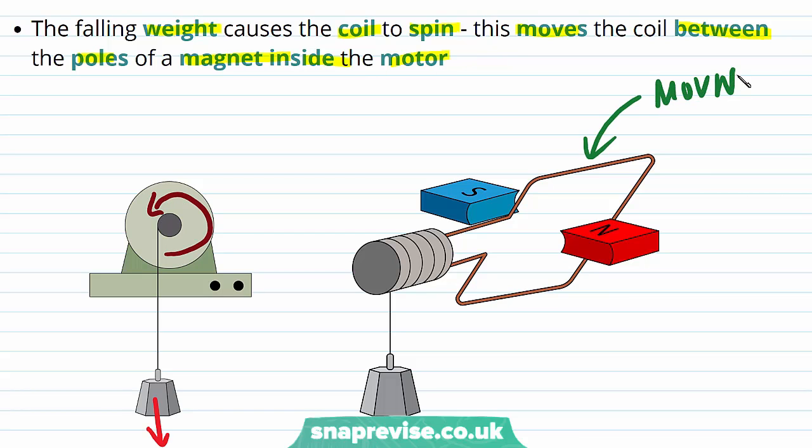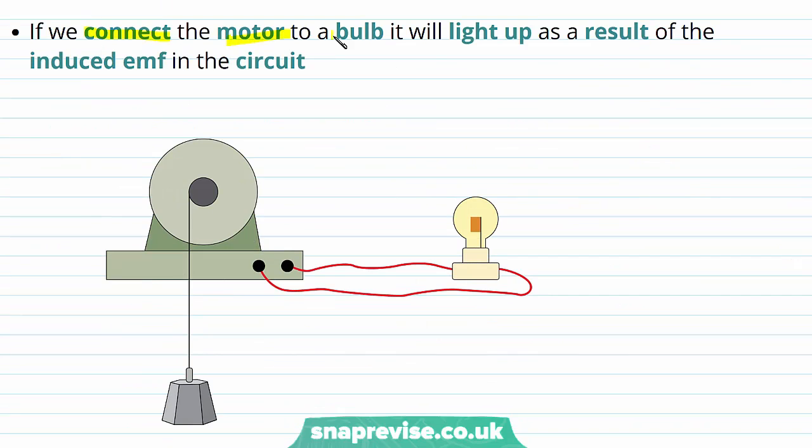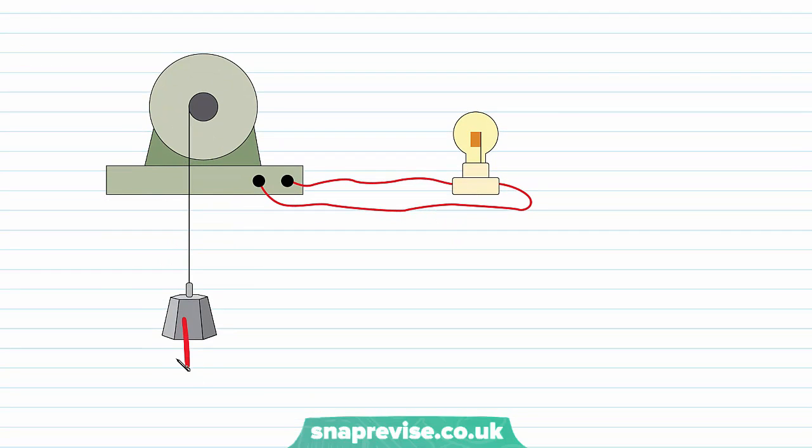Here's the moving coil, which is turned by the weight falling down, and it's going to move between the poles of a stationary magnet inside the motor. If we connect the motor to a bulb, it will light up as a result of the induced electromagnetic force in the circuit. The effect of the falling weight is going to be to induce a current in this circuit, and this is due to the induced EMF.